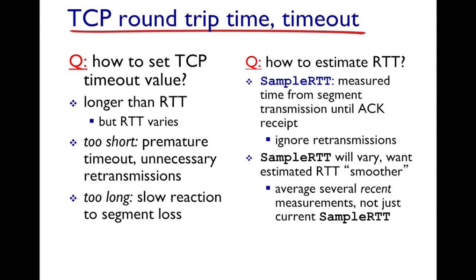The timer is a very critical aspect of TCP and it has to be set intelligently. To do that, we try to estimate the round-trip time, or RTT. The issue with estimating RTT is that it varies, because packets sent over the internet take different amounts of time to travel from source to destination and for the acknowledgement to come back.